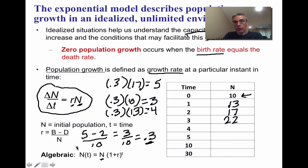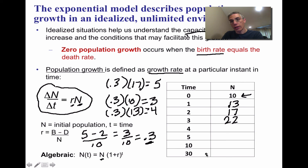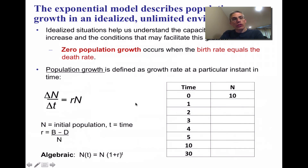There is also a second way to find the same information using a bit of algebra with the equation shown. It produces the same results as the step-by-step method. Using spreadsheet formulas is especially helpful when dealing with the very large numbers that arise as time increases. That concludes the screencast for Chapter 53 on population ecology. Please make sure you have completed your screencast study guide.